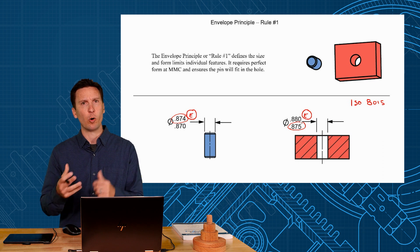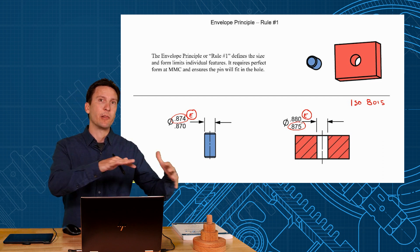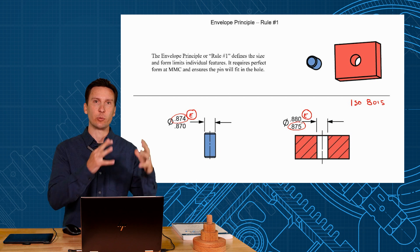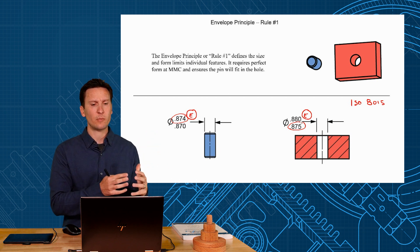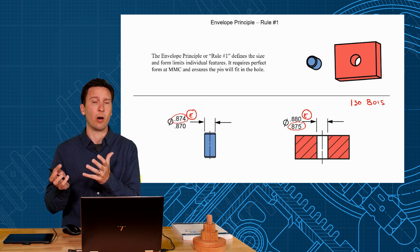ASME took the approach of what's our default. They thought it should be the most common thing should be the default and that's what they set envelope requirement as the default condition and then you can use independency to get it off.